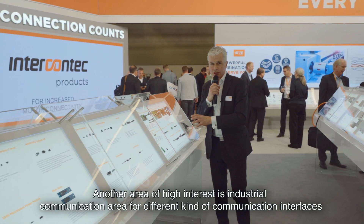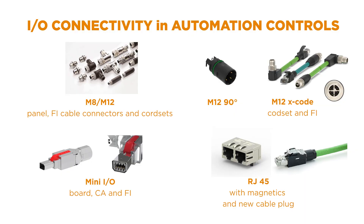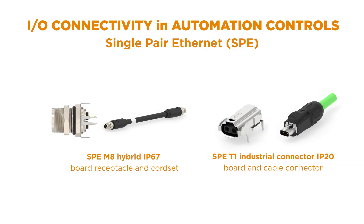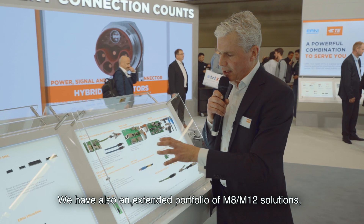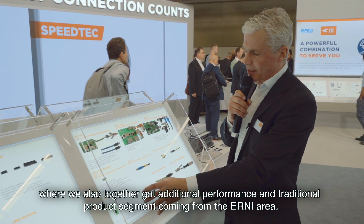Another area of high interest is the industrial communication area — different kinds of communication interfaces using RJ45 solutions and modular jacks, where we have industrialized designs meeting market requirements in terms of operating temperature and different conditions. We also have our specialized Mini-IO, a very strong product meeting harsh requirements and high vibrations, using what we call the fighting snake contact solution. We also have an extended portfolio of M8 and M12 solutions, with additional performance and premium products coming from the Ernie range.